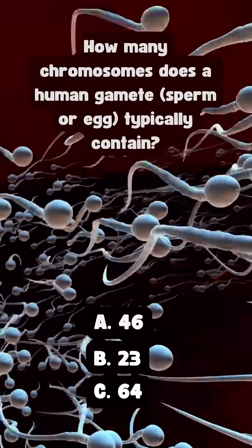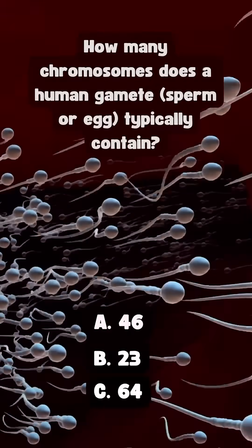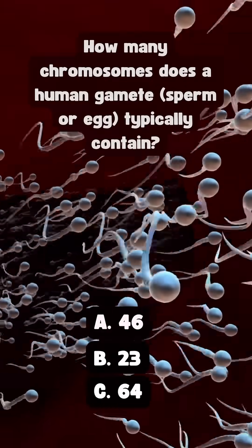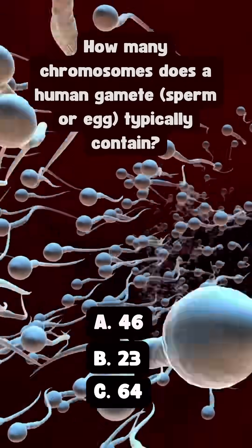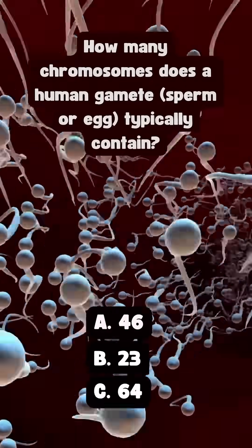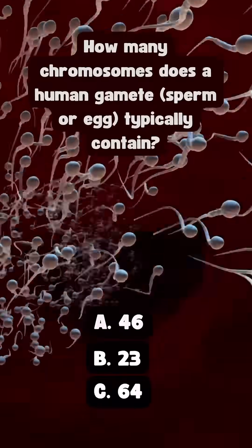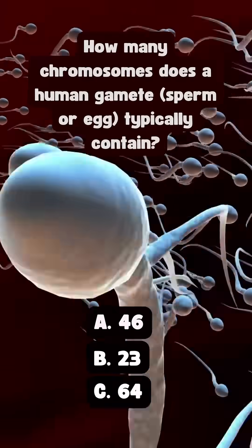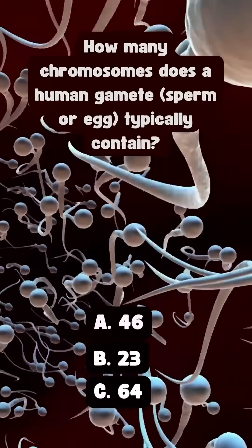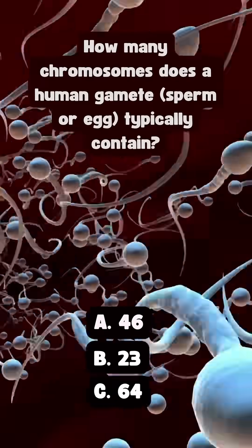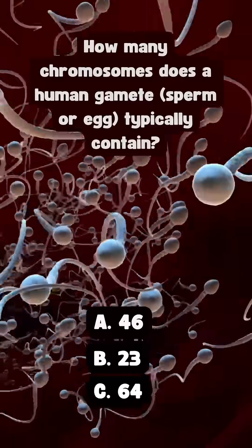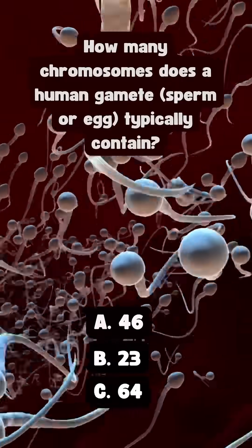How many chromosomes does a human gamete — sperm or egg — typically contain? 23.